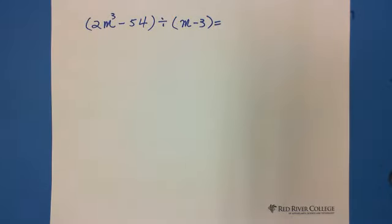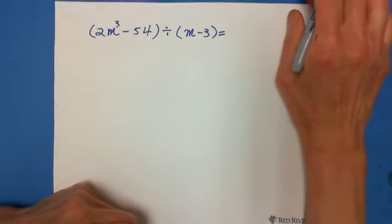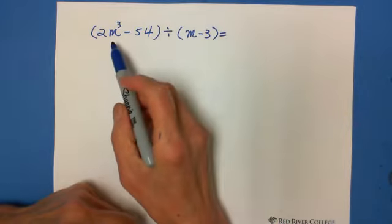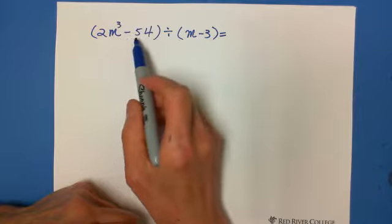The question is 2m cubed minus 54 divided by m minus 3. You can see after m cubed, there should be m squared and m, then the constant. But here they are missing.